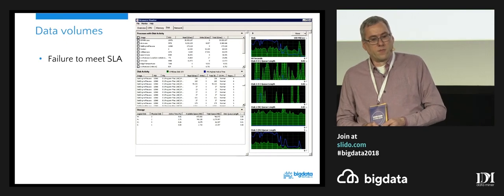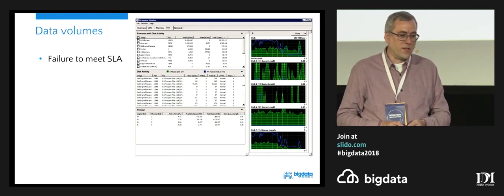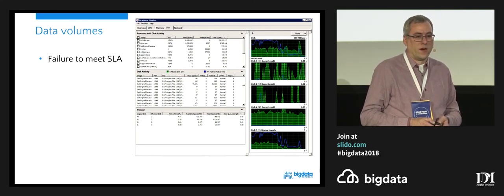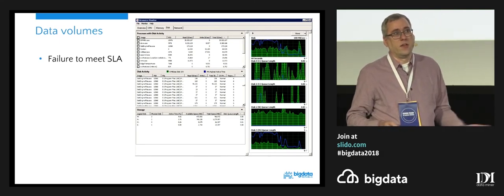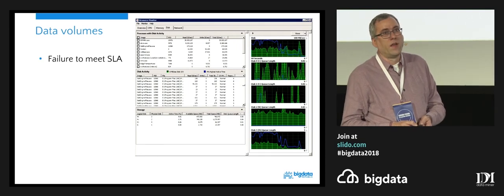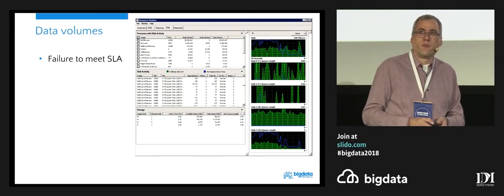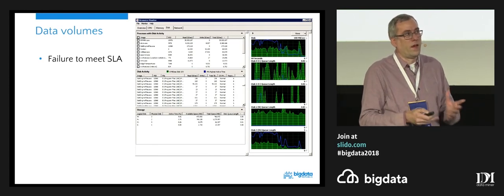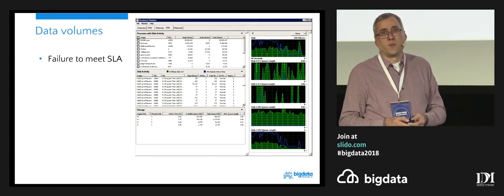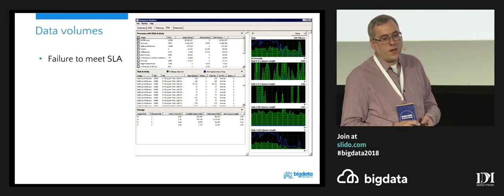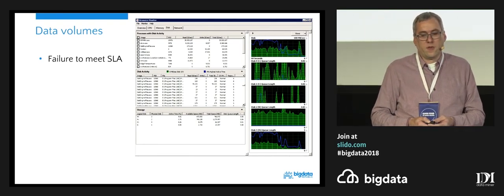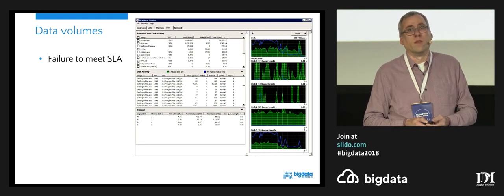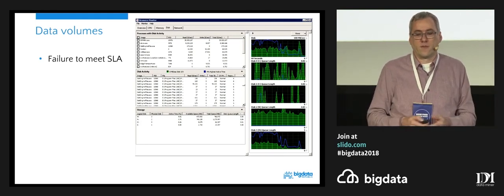The other things that come up, especially for companies that have very high growth, are data volumes. At some point you have processing stages that in the beginning take one hour. But if you have companies that grow at 40% on a yearly basis, the initial data values — with calculations that can be exponential in nature — will easily lead to failures to meet the SLA. I've seen cases where this can grow to take about 11 hours of processing, finishing at 11 o'clock in the morning.